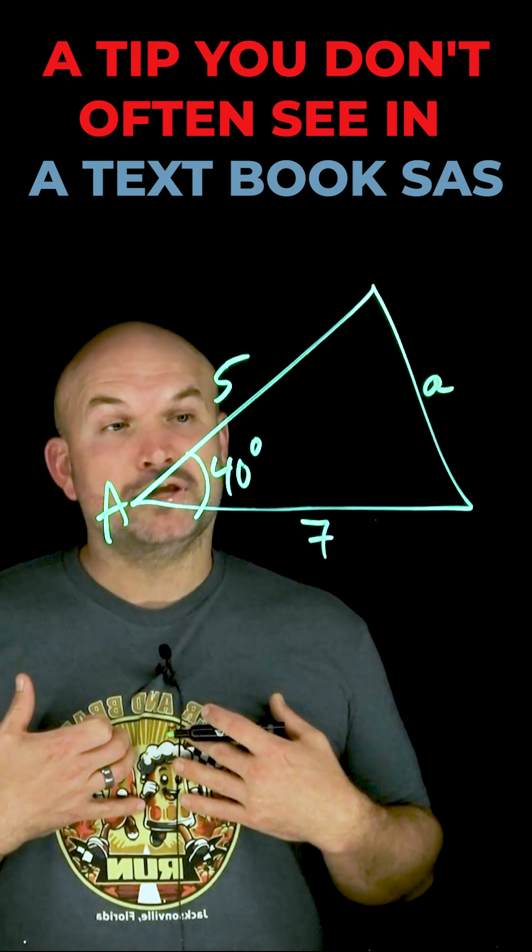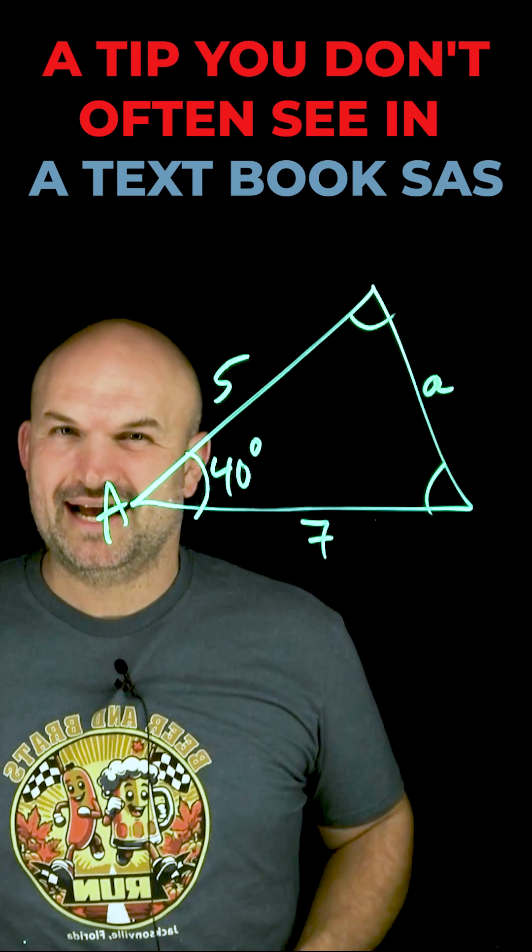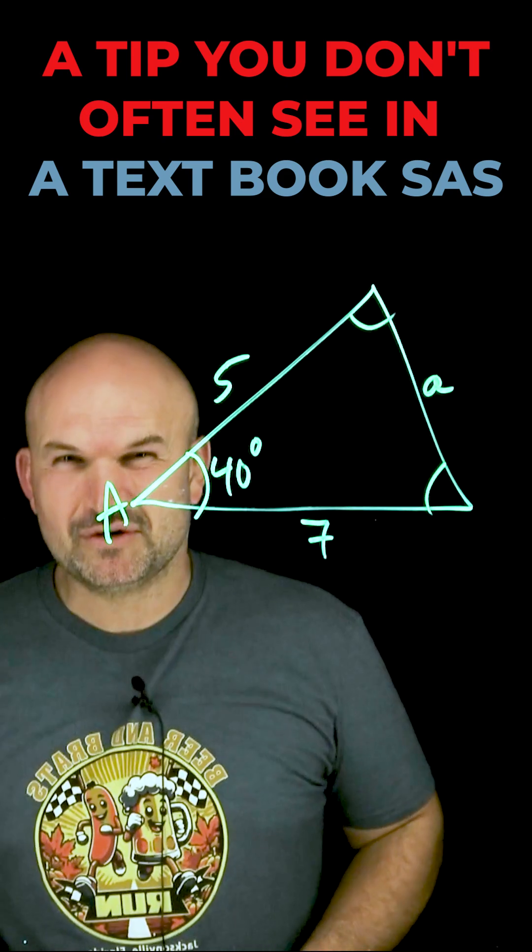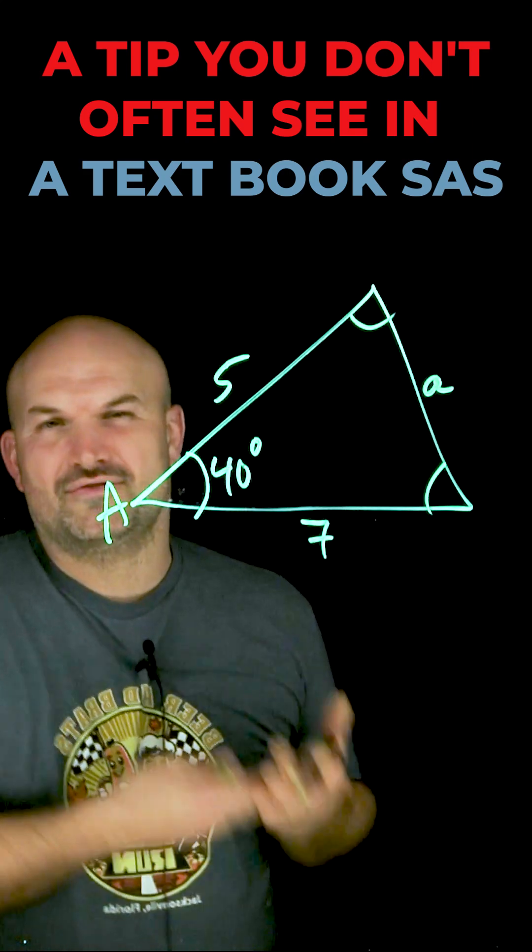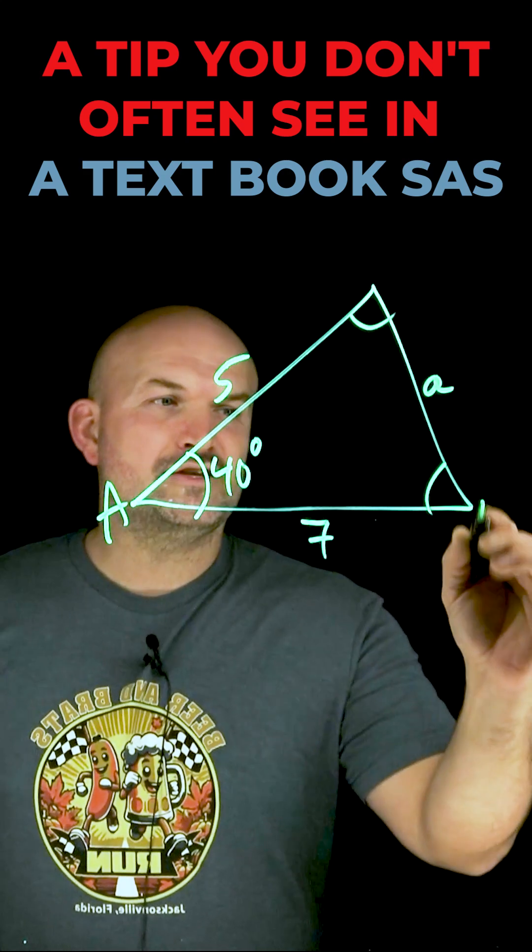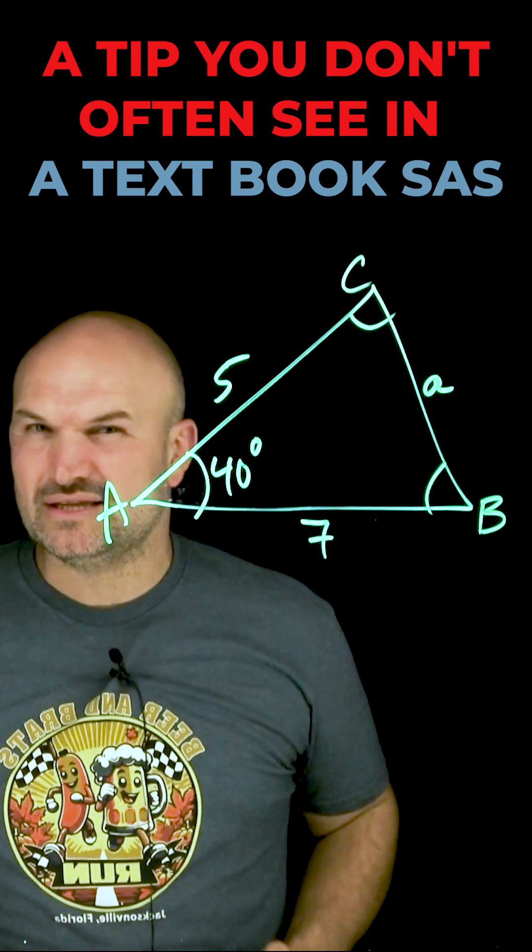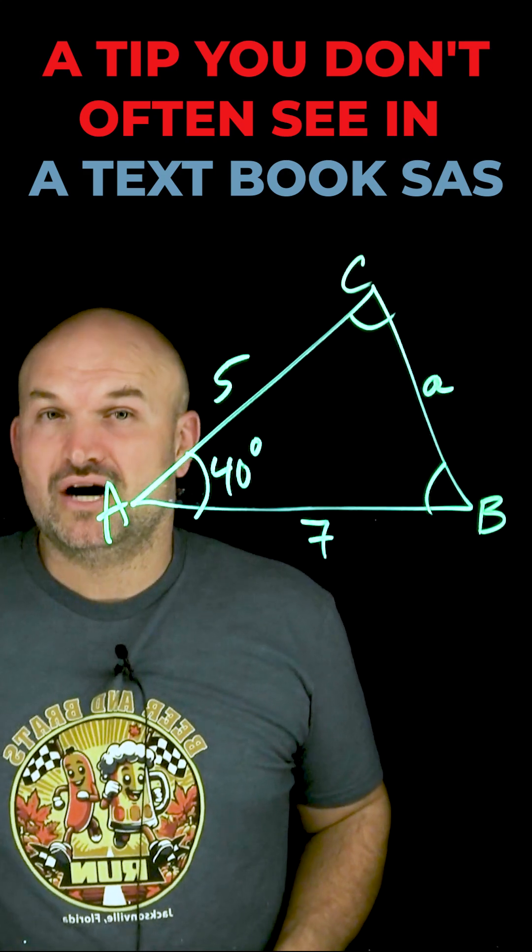And then the best thing about the law of cosines is you can use the law of cosines to find these missing angles. But for any of you that have used the law of cosines, you recognize it's a lot to type in the calculator. There's a lot of opportunities for us to make mistakes. So rather than trying to find B and C using the law of cosines, we could also use the law of sines.